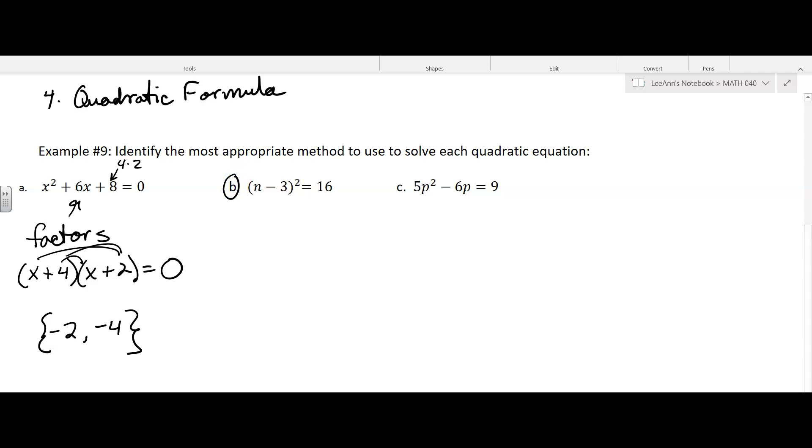b. Well, I have something being squared, so I'm just going to take the square root of both sides. I'm not going to multiply the whole thing out and then try to use the quadratic formula, or maybe it factors, probably factors, but that would just be a lot of work, and I don't need to. I can just take the square root of both sides.